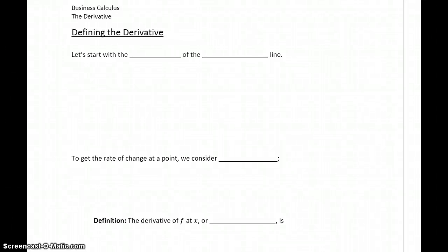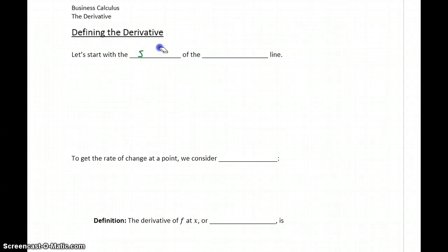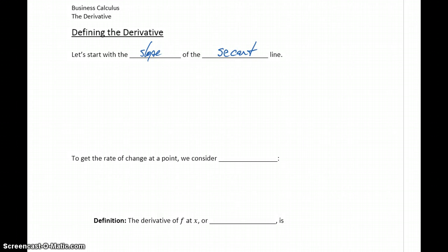We've demonstrated the idea that graphically what we're trying to do is start with a secant line and then bring those two points closer and closer together so the distance between them is virtually nothing. So let's start with the slope of a line, or the slope of our secant line, connecting two points on our graph.